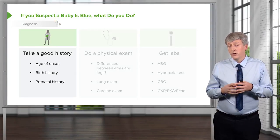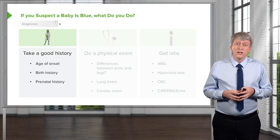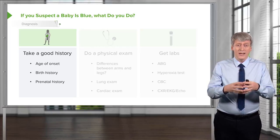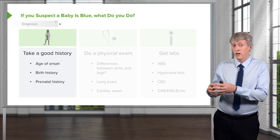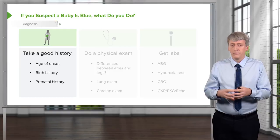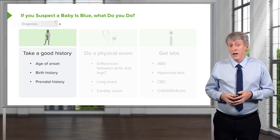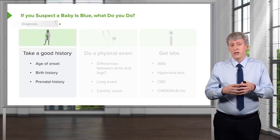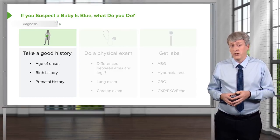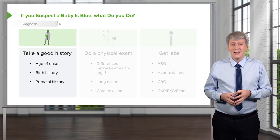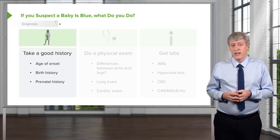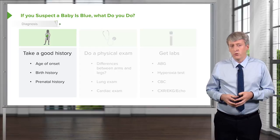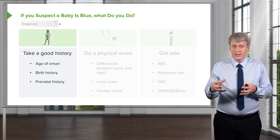It's important to take a very good history, and in particular to note the age of onset of that child's cyanosis. Were they blue when they came out of the uterus and remained blue the whole time, or did something change in the interim? It's important to know about the birth history. Babies who are very large, for example, are at increased risk for persistent pulmonary hypertension of the newborn, which is not cyanotic heart disease — and that would be a clue to ask about to get a sense of the underlying history driving the baby to be blue.